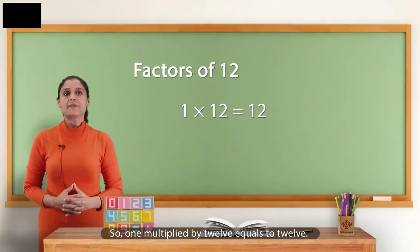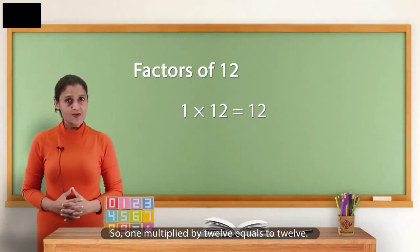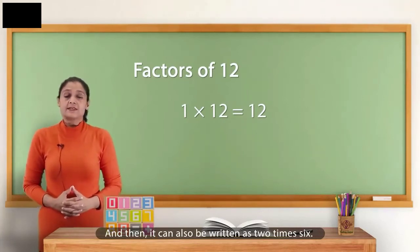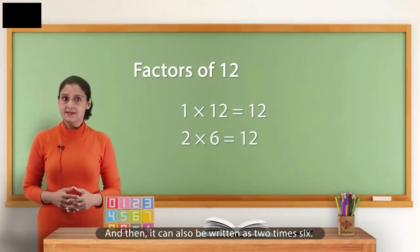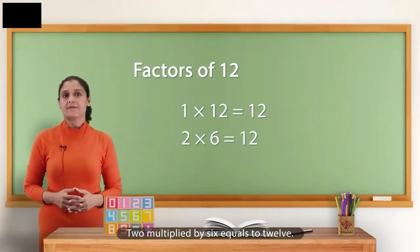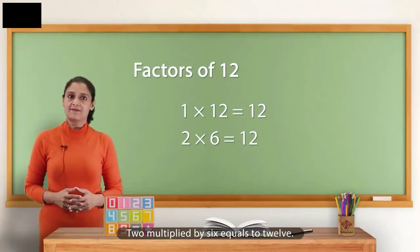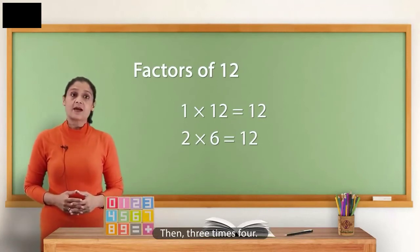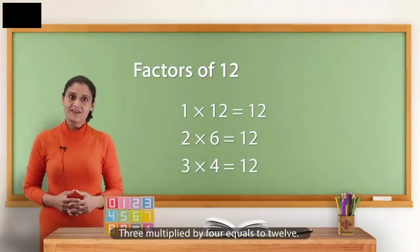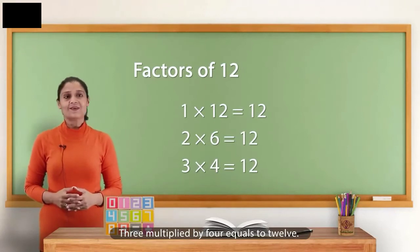So, 1 multiplied by 12 equals to 12. And then, it can also be written as 2 times 6. 2 multiplied by 6 equals to 12. Then, 3 times 4. 3 multiplied by 4 equals to 12.